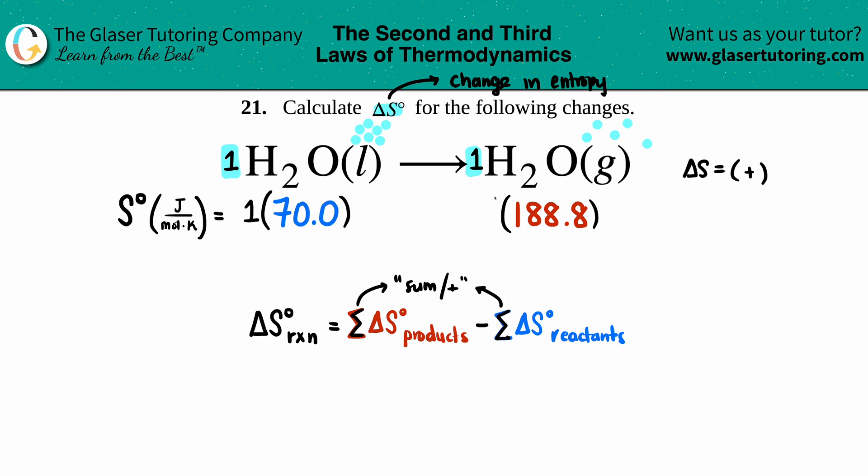So whatever your delta S value is at the back of the textbook, that's what you times by your coefficients. But in this case I'm both timesing them by one because you had one for each. So in this case the numbers aren't going to change—this is still going to be 70.0 and this is going to be 188.8.